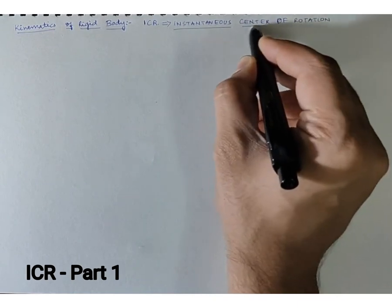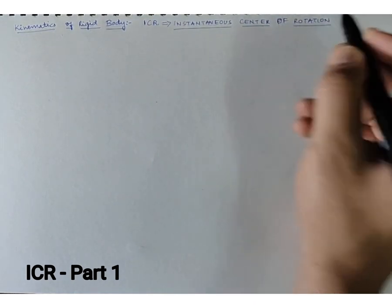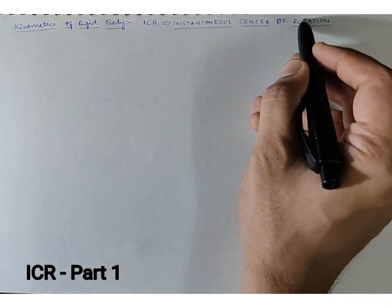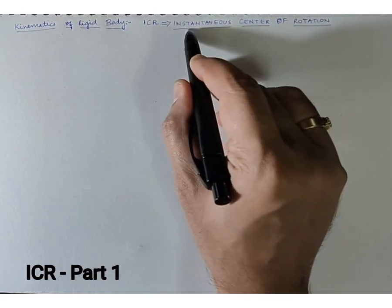What does instantaneous center of rotation actually mean? It means the center of rotation of any given object for one particular instant.